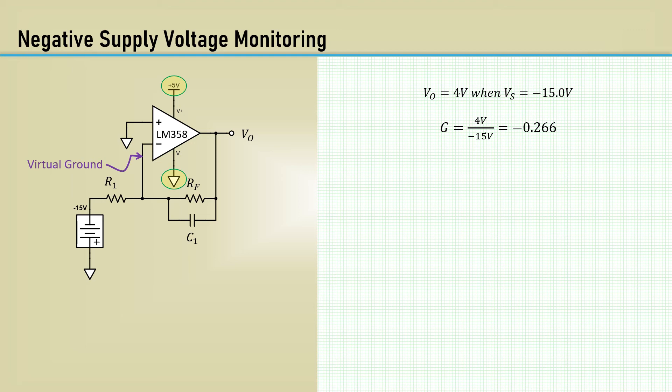Let's say we want the output voltage to be plus 4 volts when the minus 15 volts is exactly minus 15 volts. A nice feature of the inverting amplifier is you can have a gain of less than unity. In this case, a gain of minus 0.266. Bear in mind, too, the low gain reduces the error caused by the input offset voltage.